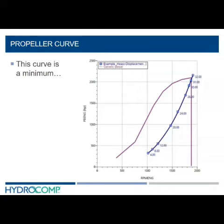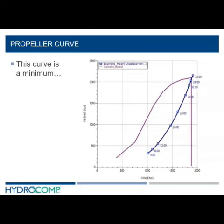If we overlay the propeller power curve over our engine's maximum power curve — the blue line being the propeller curve and the purple line being our engine maximum power curve limit — we get a graph like this.